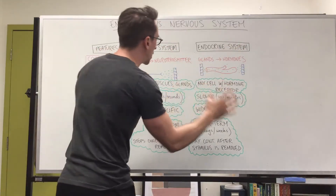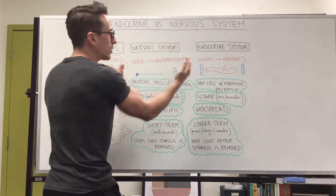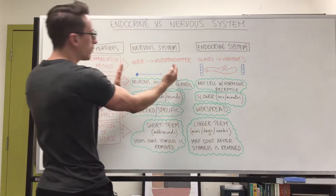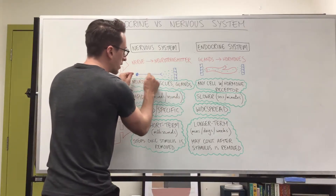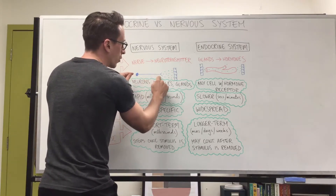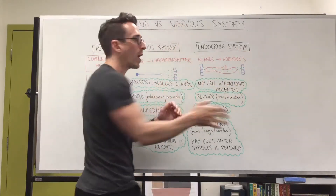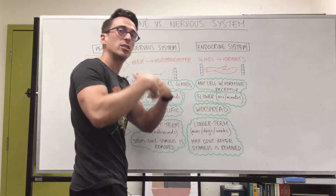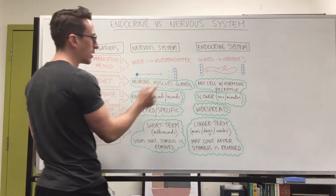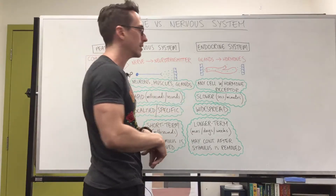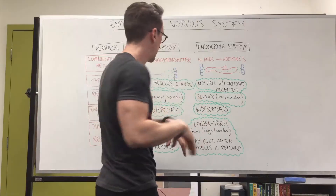When we compare the nervous system to the endocrine system, which one is faster? The nervous system is faster because it's direct — it sends an electrical signal down an axon of a neuron, which then turns into a chemical signal. The endocrine system is always a chemical signal and it's slow. The nervous system operates in milliseconds to seconds, while the endocrine system takes seconds to minutes to have its effect.